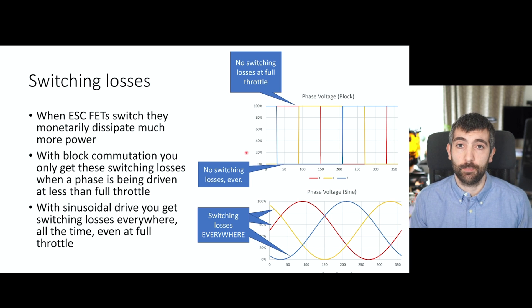The second problem with sinusoidal commutation is to do with the driving voltage. With block commutation at full throttle, you are getting the full battery voltage across every phase. So let's look here at the terminal X and terminal Z. Between X and Z, we are getting full battery voltage. That means full battery voltage across phase A and that's giving us maximum power. With sinusoidal drive, let's look at the same point. So we're looking between red and blue. You can see that there's nowhere where we get full battery voltage across that phase. At most, we get about 87% of battery voltage across the phase at the peak where the two sinusoids are as far apart as possible. This reduces the maximum torque and maximum power that we can get from a motor with sinusoidal drive compared to what we can achieve with block commutation.